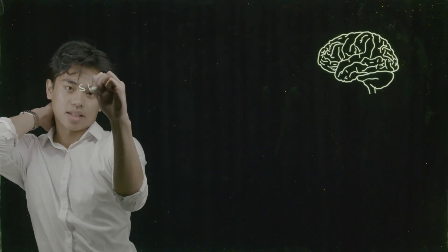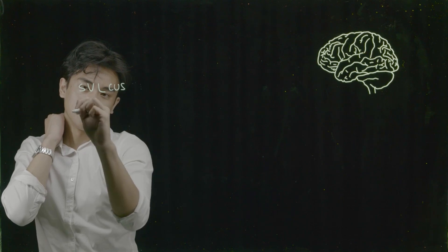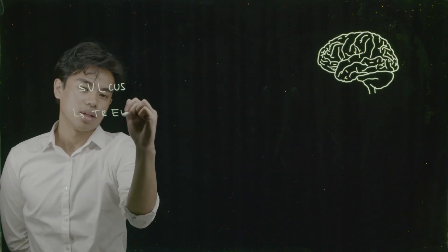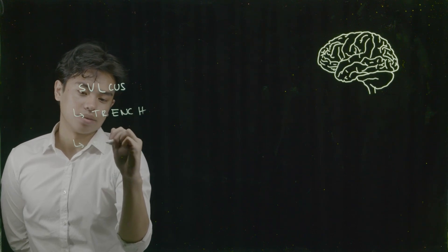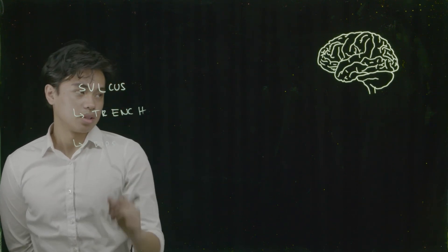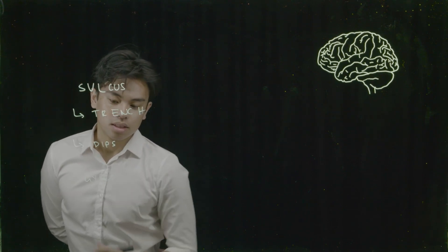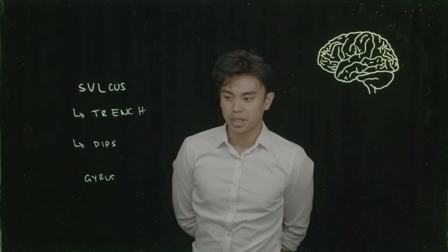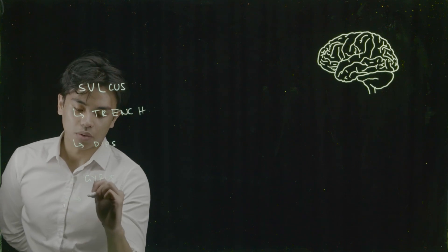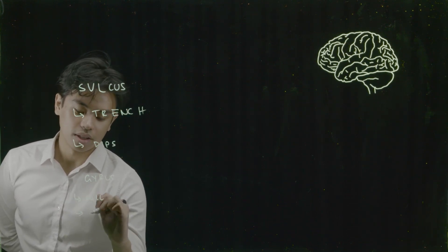Hello everyone. Today I'll be showing you a method for memorizing brain anatomy and executive functions. Before we get started, I need to introduce two anatomical terms: gyrus and sulcus. Our brain consists of numerous dips and ridges called gyrus and sulcus. Sulcus translates from Latin meaning trench, representing the dips of our brain. Gyrus derives from the Greek term gyro, meaning coil, representing the ridges of our brain.